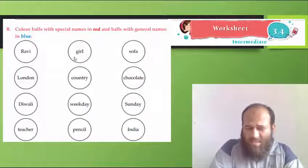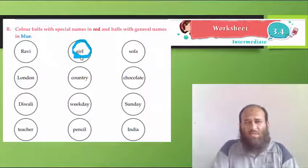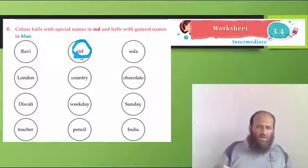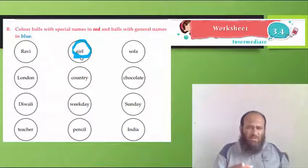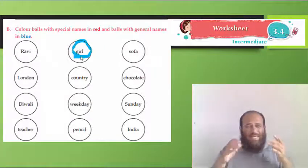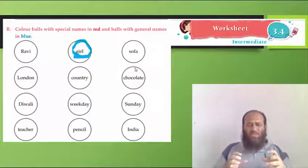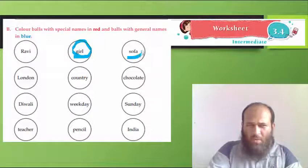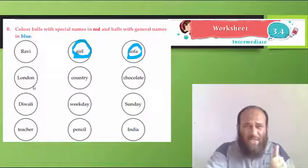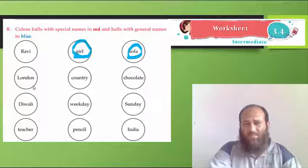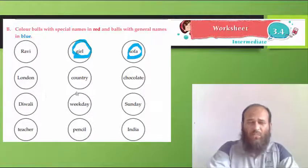But girl? Yes. There are many girls in the class, in the whole world. So, I will color girl because it is a general name, not a special name. Sofa. I have one sofa in my house. Do you have a sofa in your house? This is a general name for cushion sofa. I am going to color it blue. London? Well, London is name of a city. It is a special name given to a city in England. I will not color it blue.